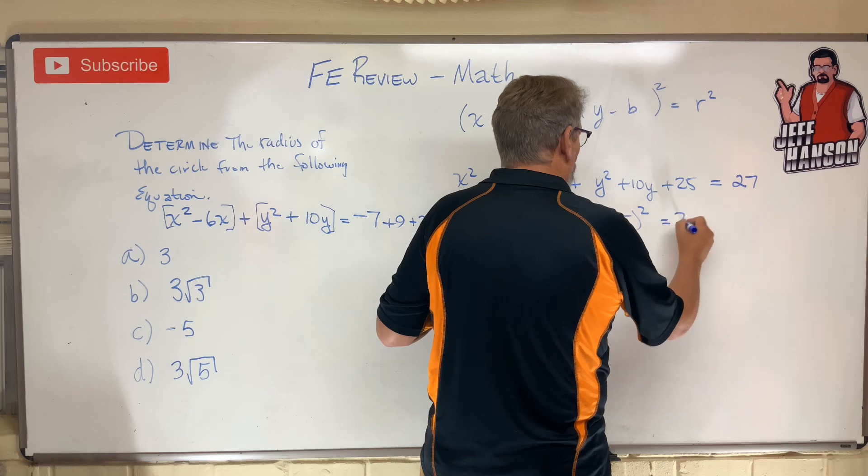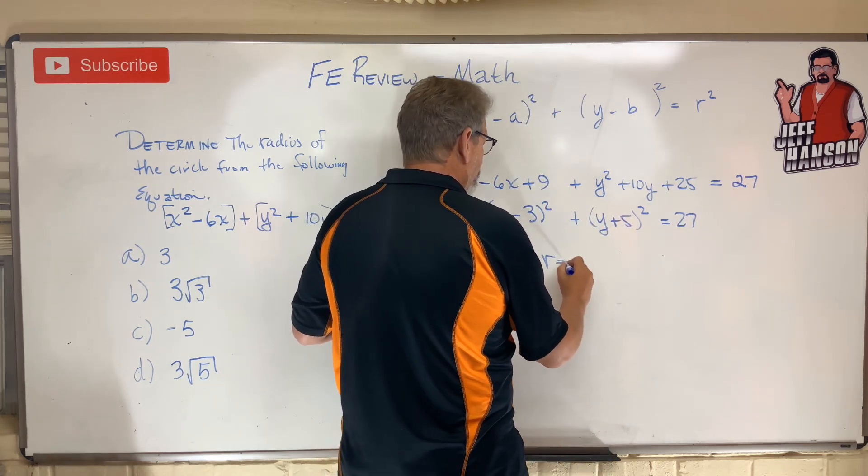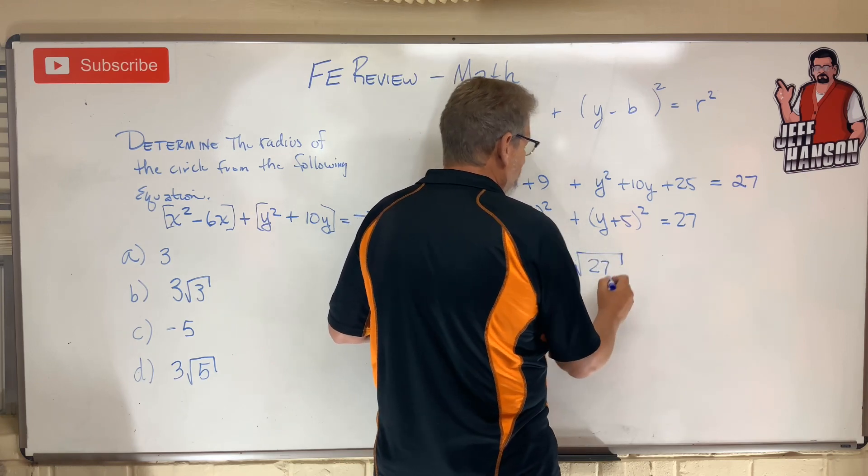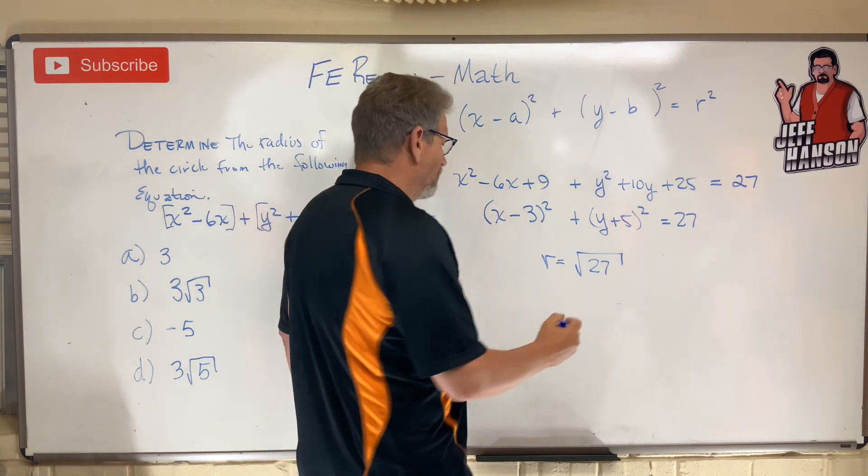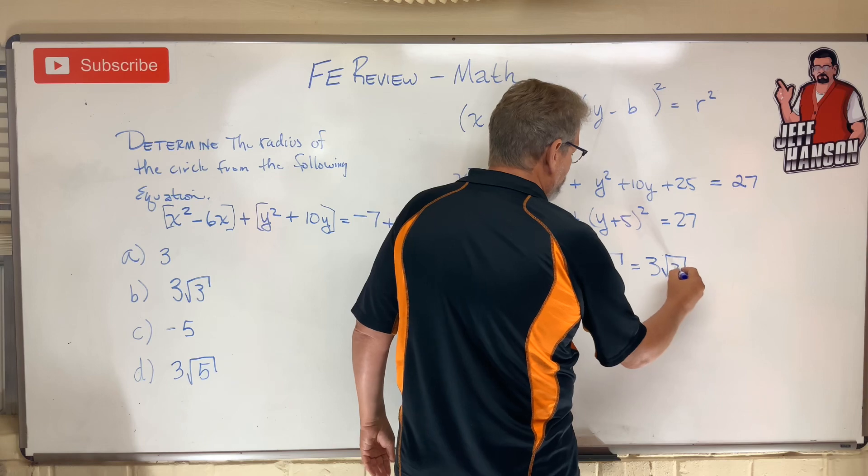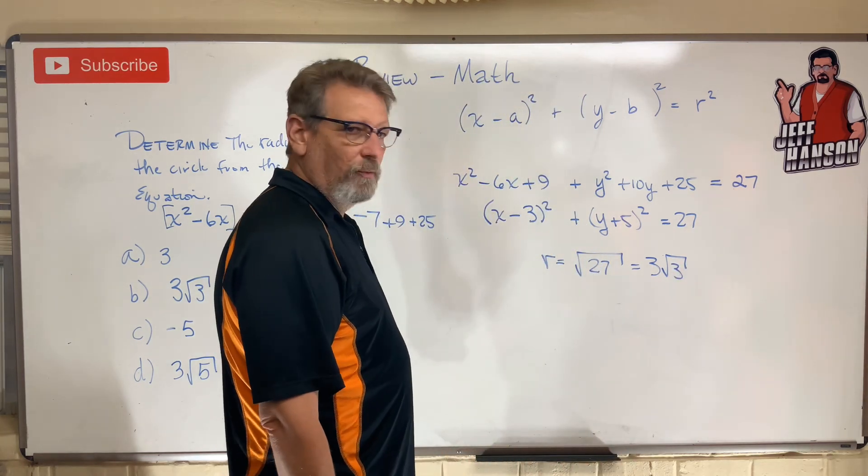And so what does r equal? r equals the square root of 27, which is 3 × 3 × 3, which is equal to 3√3. Wow, we just did that, didn't we?